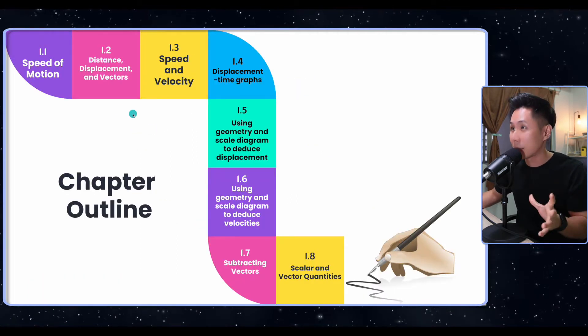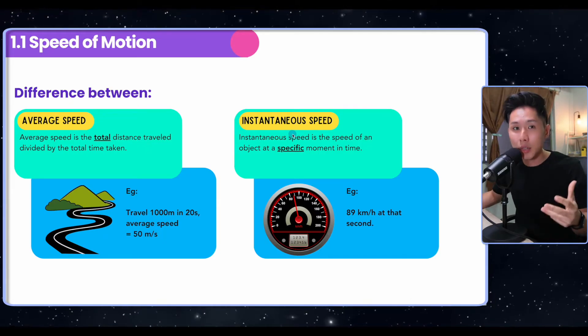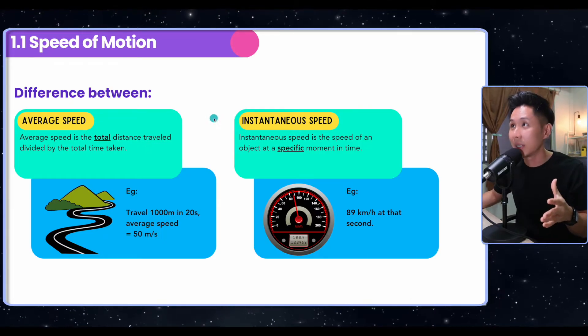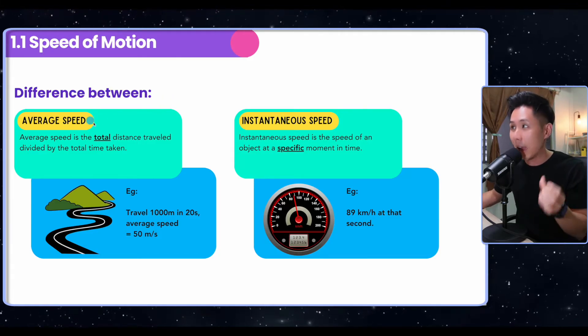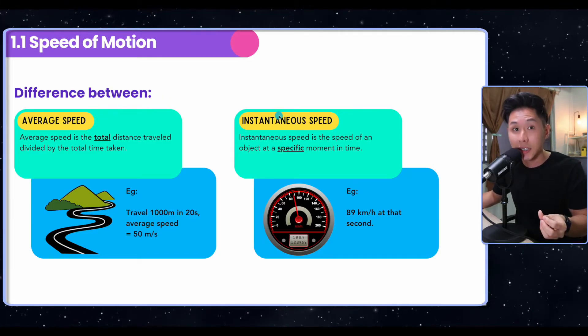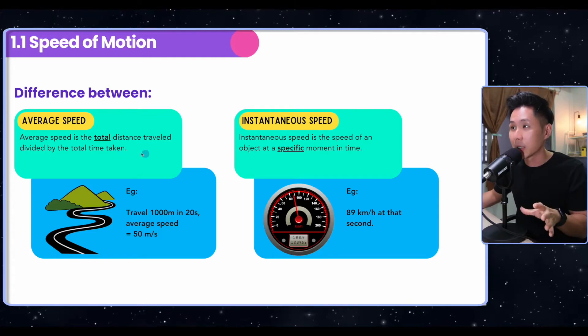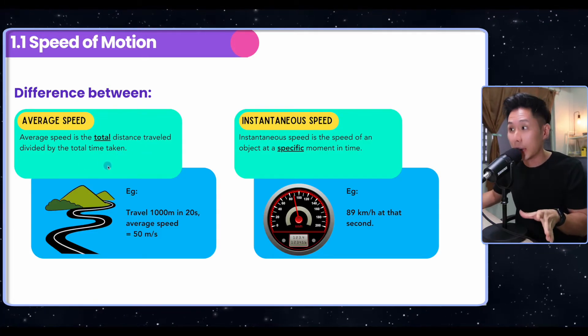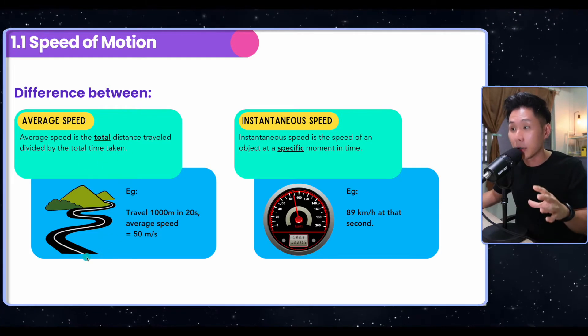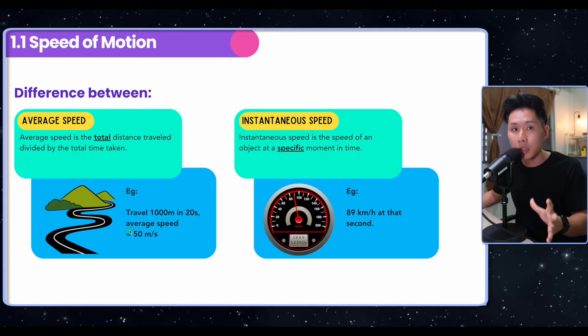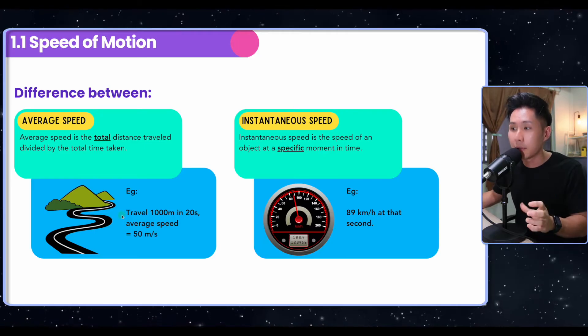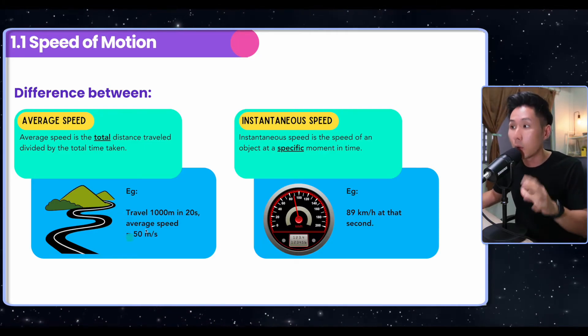The chapter outline is also here. The first subject we're going to look into is speed of motion. We're going to look at what's the difference between average speed and instantaneous speed. Average speed is the total distance traveled divided by total time taken. For example, if you are traveling from one spot to another, your speed may be different throughout the journey.